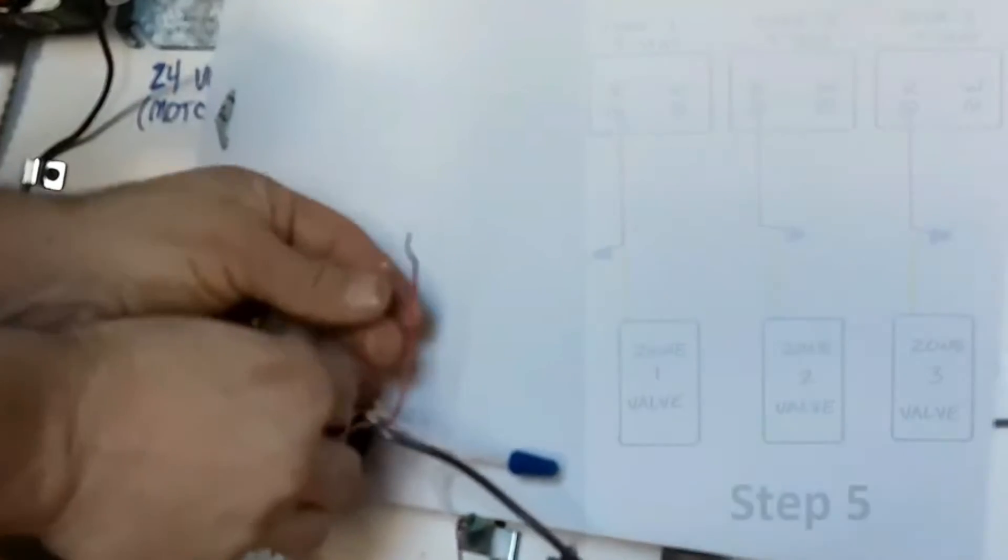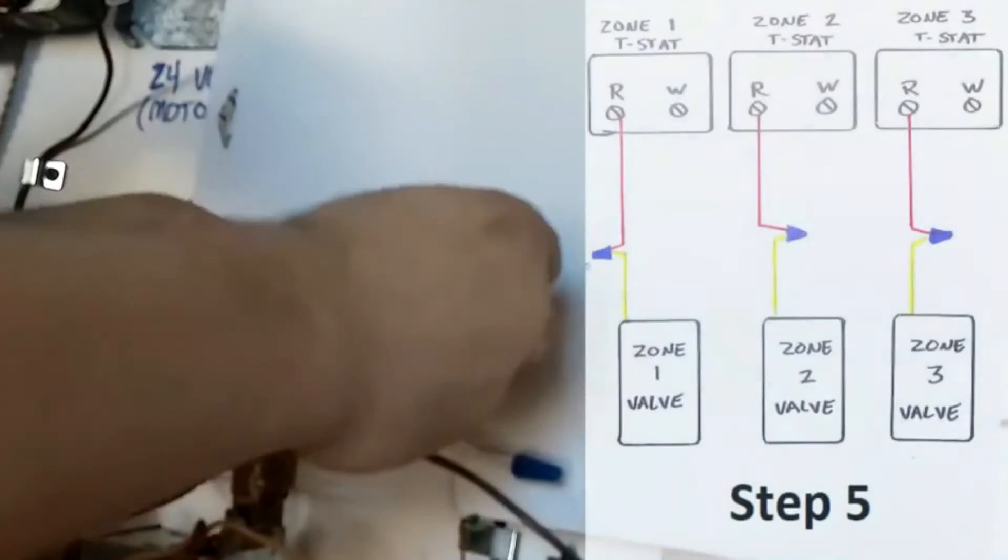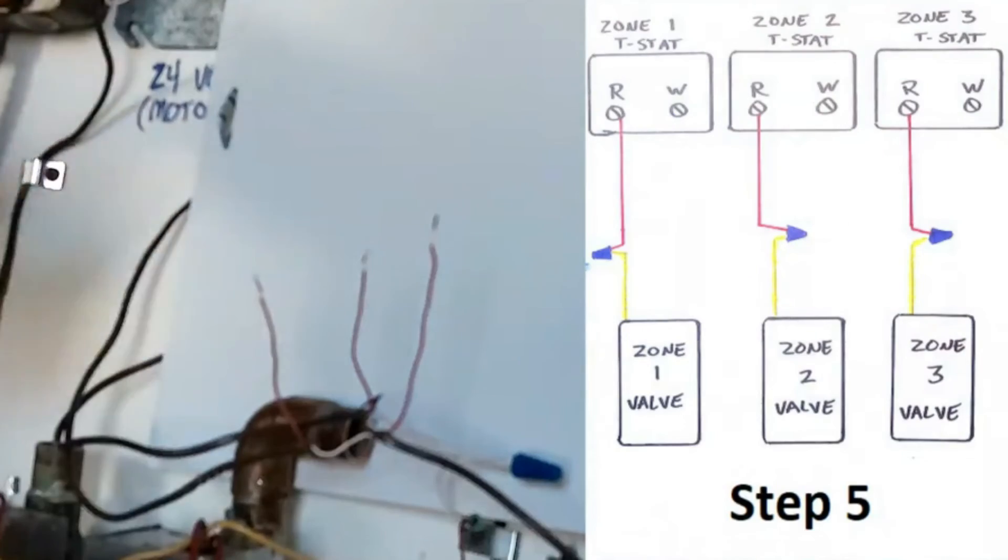So now what we have left for step five is one red wire from each thermostat and these are the wires that go to your R terminals and we're going to hook those up to each one of the yellow wires left on our zone valve.